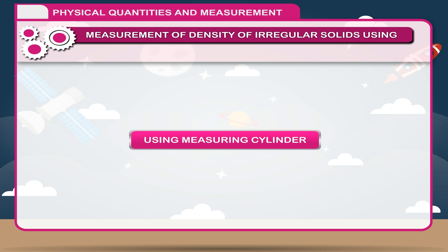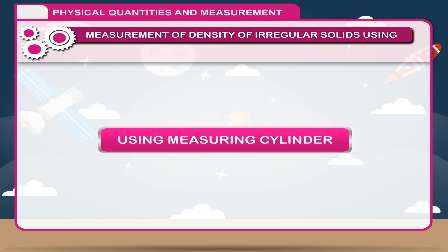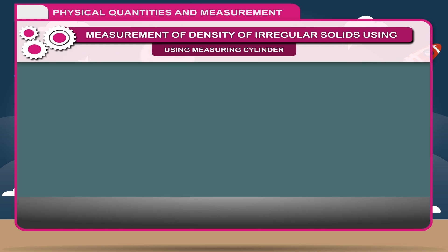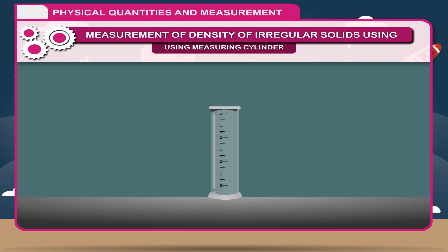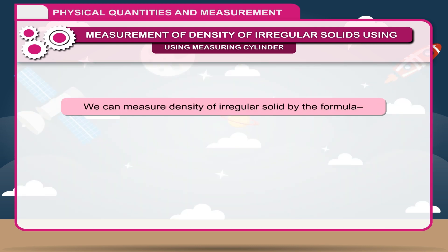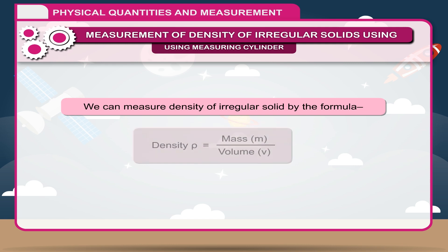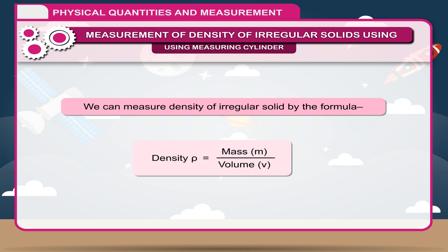Using a Measuring Cylinder: By measuring mass using a beam balance and volume using a measuring cylinder, we can measure the density of an irregular solid by the formula Density is equal to mass divided by volume.